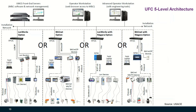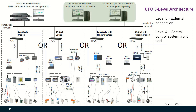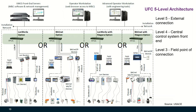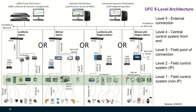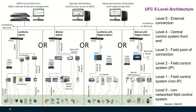In the Unified Facility Criteria (UFC), a five-level control system architecture is defined. Level five is the external connection level. Level four is the central control system front-end, which includes operator workstations or advanced operator workstations. Level three is the field point of connection. Level two is the field control system IP network. Level one is the field control system non-IP network. There is also a level zero for non-networked field control systems.